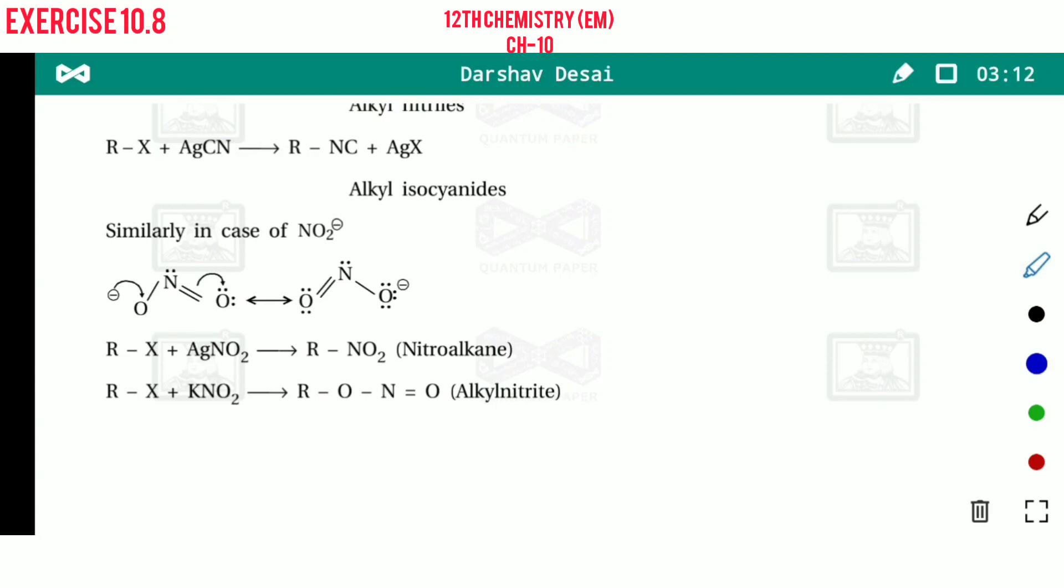In first resonating structure, you can see nitrogen acts as a nucleophile. If nitrogen acts as a nucleophile, then attacking reagent is nitrogen. So R-NO2 is formed. Haloalkane reacted with silver nitrite, AgNO2. And if nitrogen acts as a nucleophile, then nitroalkane is formed.